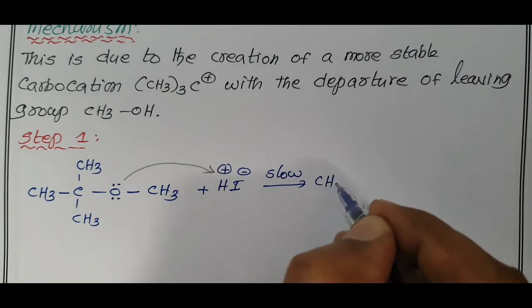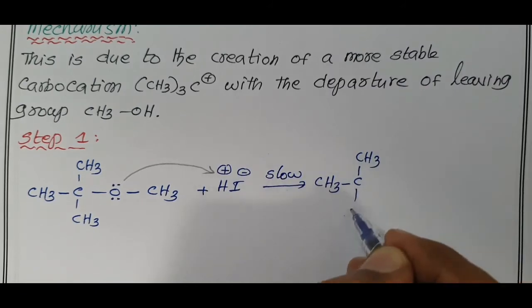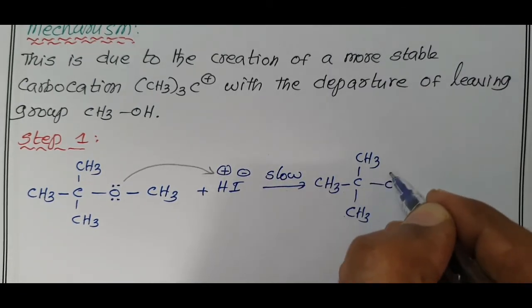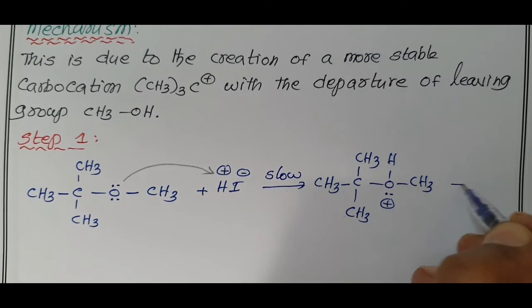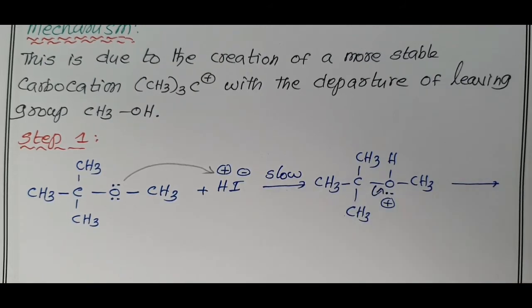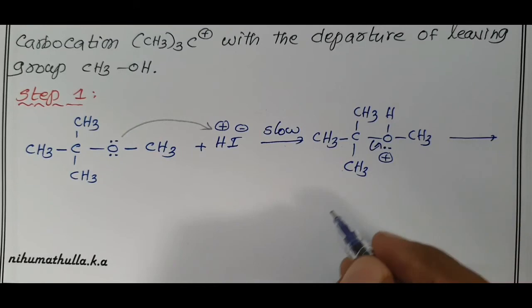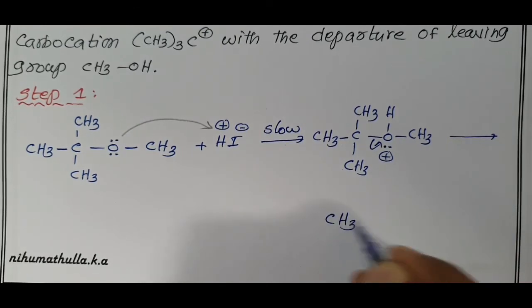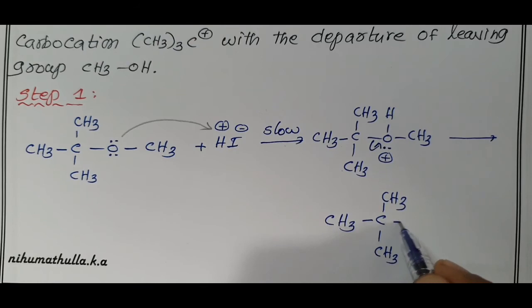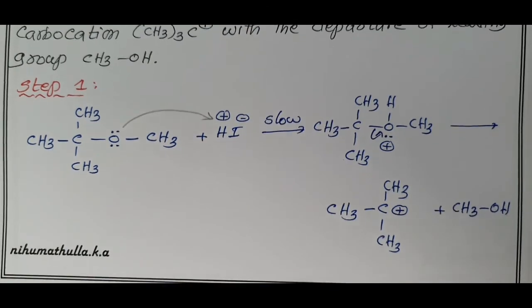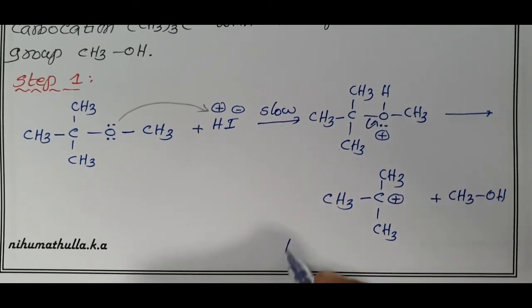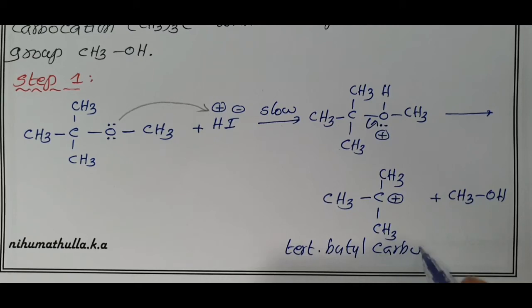Thereby, a positive charge is formed on the oxygen atom. Whenever oxygen donates a pair of electrons, it removes a pair of electrons from nearby bond. That means methyl alcohol is removed. So, in the first step, CH3-C-CH3-CH3 with a positive charge on this carbon atom plus methyl alcohol CH3OH. This is your tertiary butyl carbocation. It is formed in the first step, which is more stable.